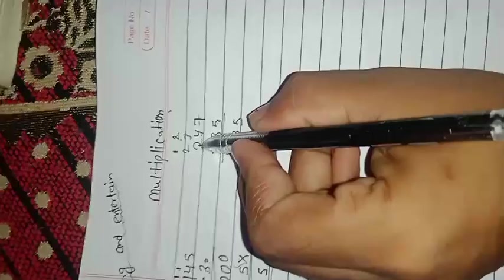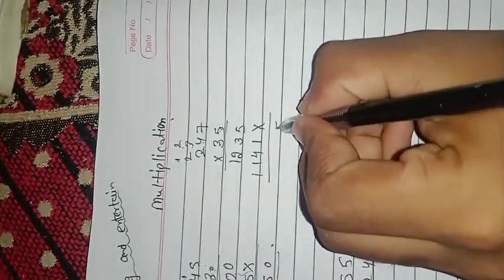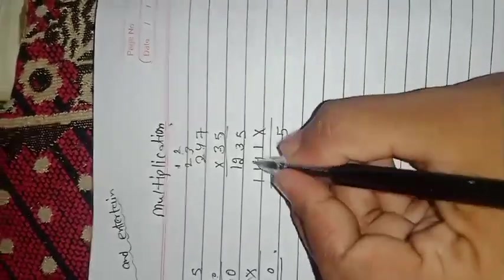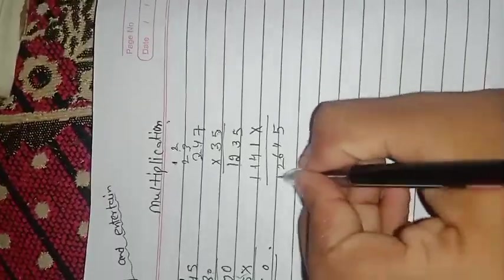7 times 3 is 21, 1 and 2 carry. 4 times 3 is 12, 12 and 2 is 14, 1 carry. Now we add: 0, 5, 3 and 1 is 4, 2 and 1 is 3, 1 and 1 is 2, 1. Okay.